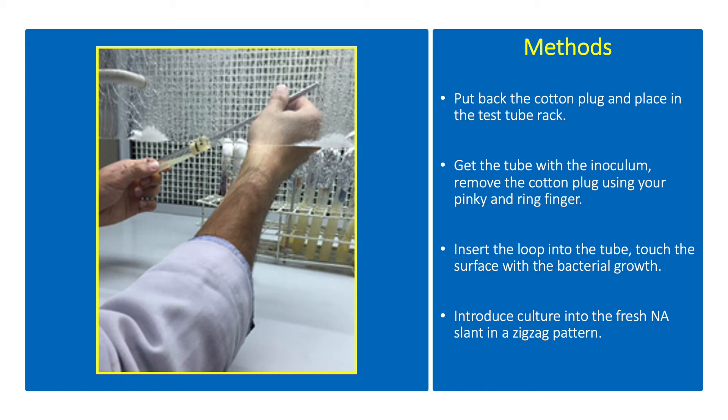Remove the cotton plug using your pinky and ring finger. Insert the loop into the tube and touch the surface with the bacterial growth. Inoculate the culture into a fresh NA slant in a zigzag pattern. Flame sterilize the loop after use.